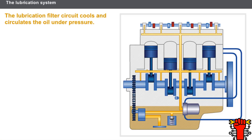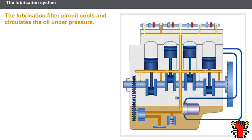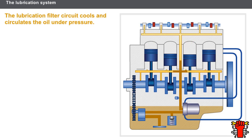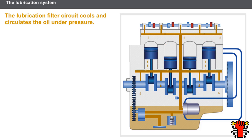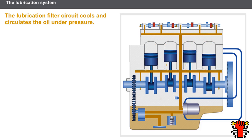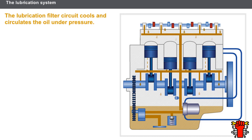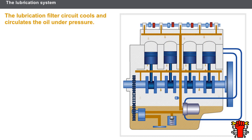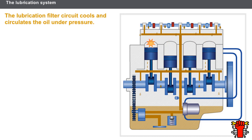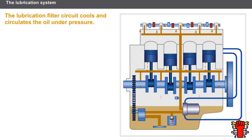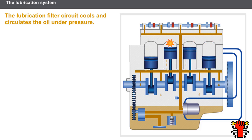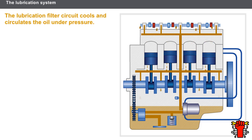Let's look at the lubrication circuit now. The lubrication system has to perform the following functions: allow the circulation of oil under pressure in the engine to lubricate the different moving components, filter the oil for impurities, and cool down the oil to keep it at an ideal temperature.